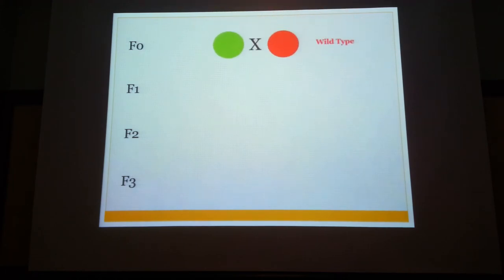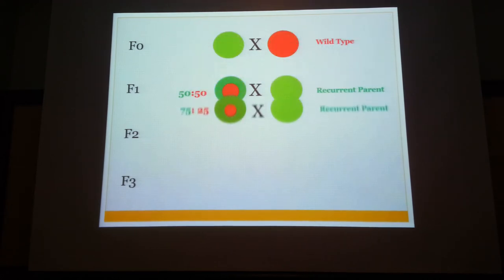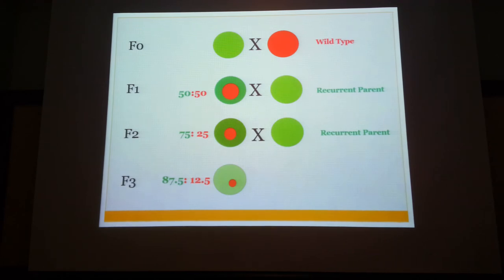I will demonstrate this using the graphic. You cross two varieties — green is the elite, red is the wild type. In the F1 generation you have a 50-50 combination, shown as concentric circles with red and green. Then I cross with the same recurrent elite variety. The next generation will contain 75% elite and 25% wild by logic. Crossing again, F3 will have an even smaller percentage of the wild variety. This process is quantitative, and you can trace it using markers. For instance, if your desired trait from the wild type is in that 12.5%, you can still trace it using markers.